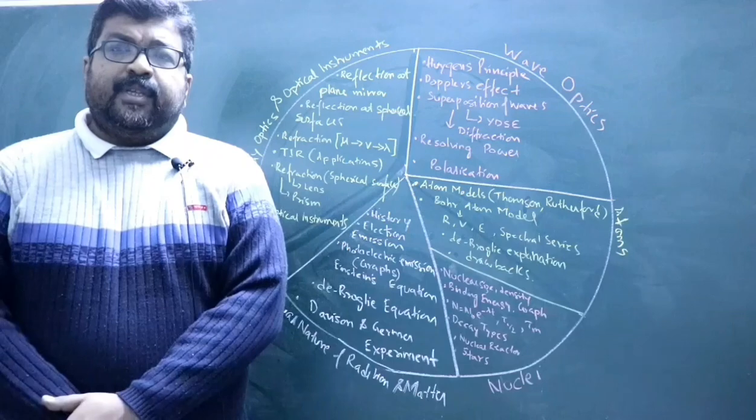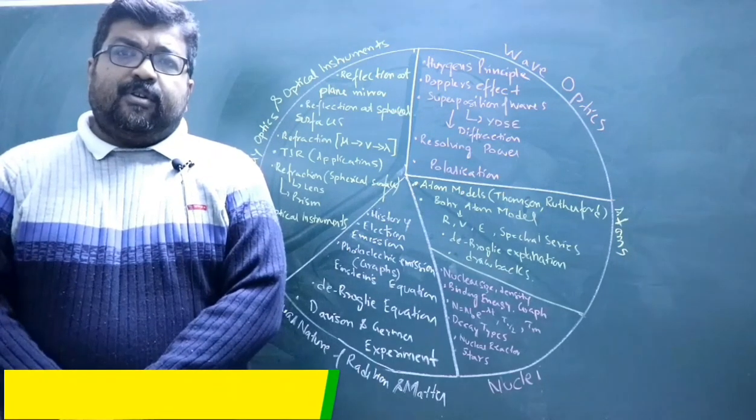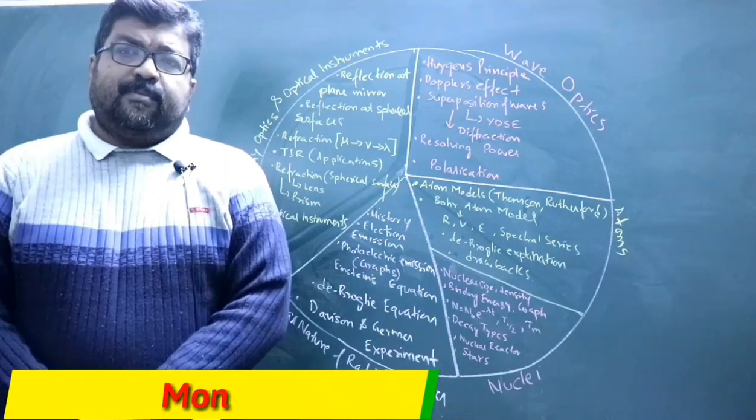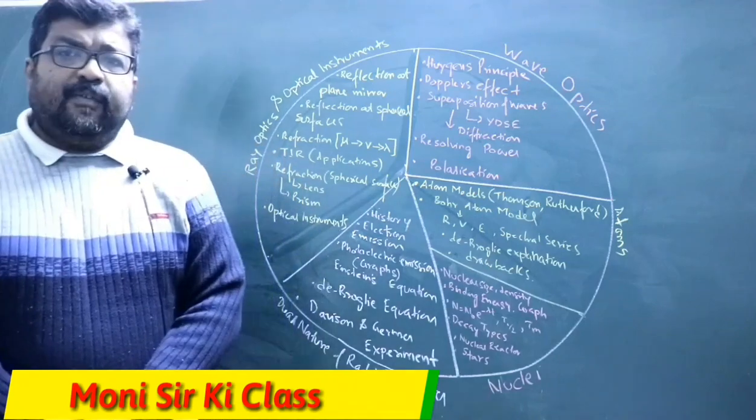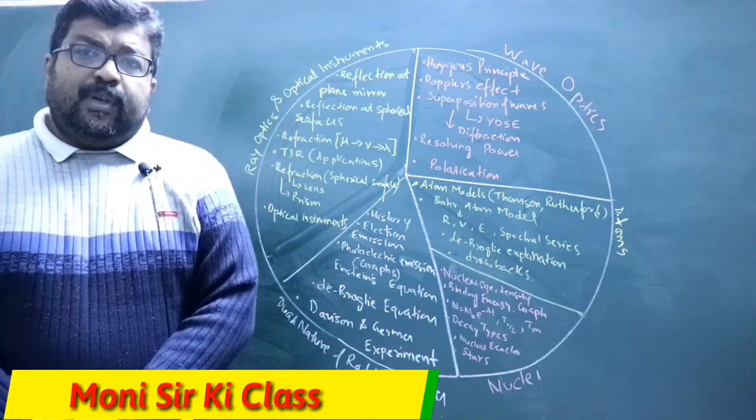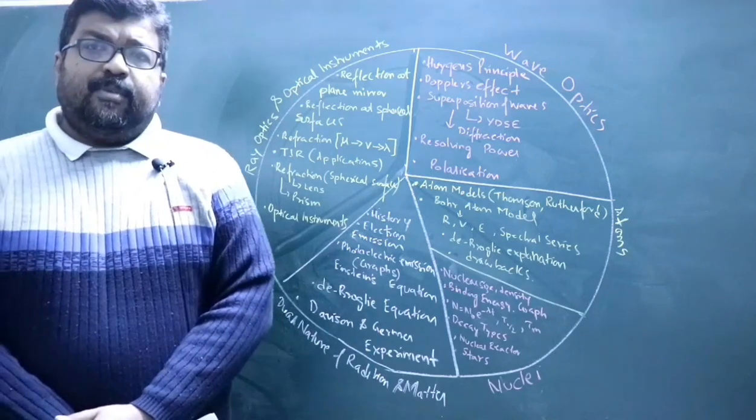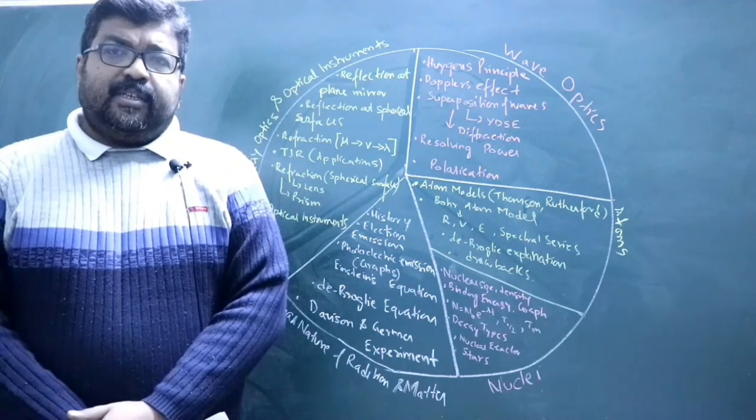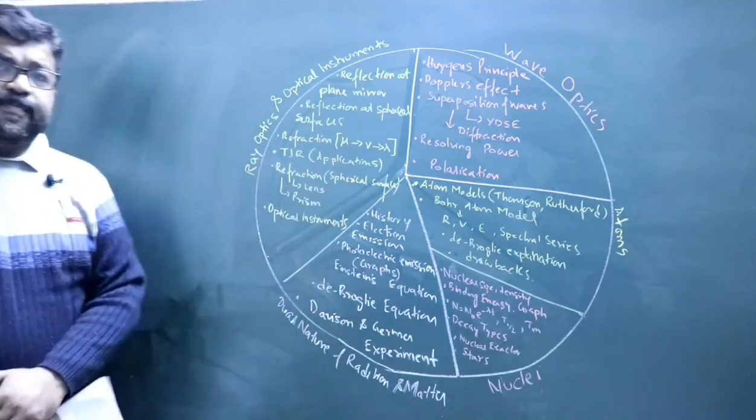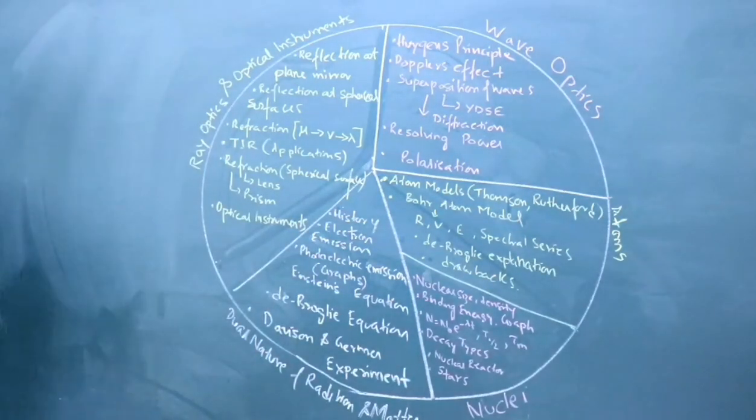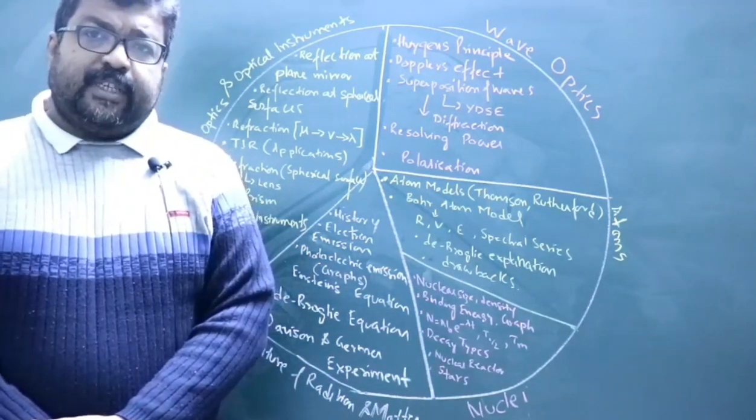Hello everyone, welcome to my channel. In this video, we are going to have a revision plan for important chapters from Volume 2 of your NCERT textbook. We'll be covering ray optics, wave optics, atoms, nuclei, and dual nature of radiation and matter. Before I start, please take a snapshot or screenshot of this diagram. Now let's proceed with the revision plan.